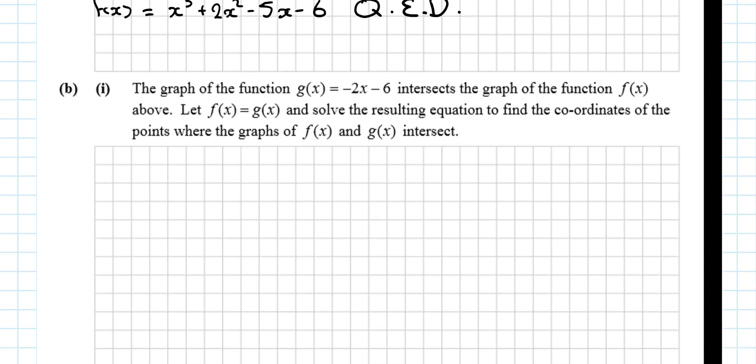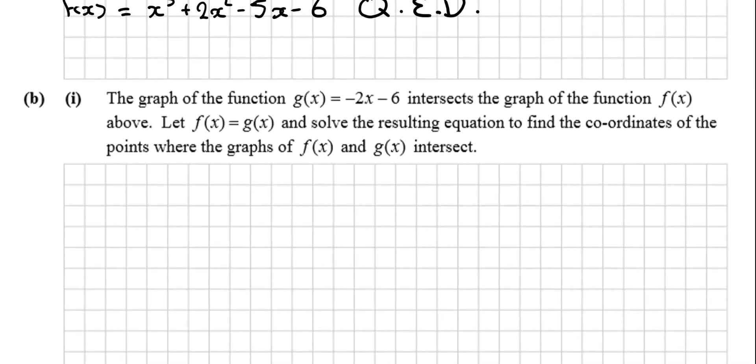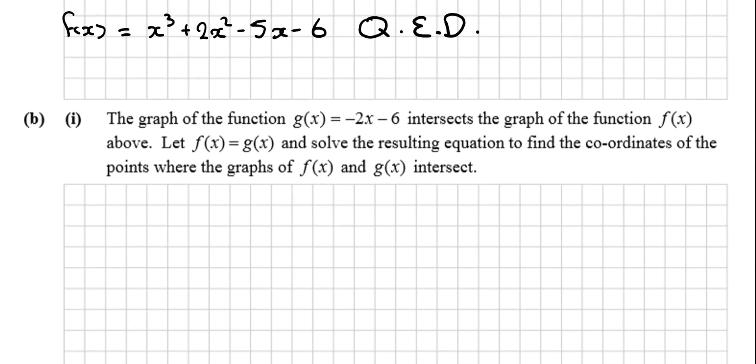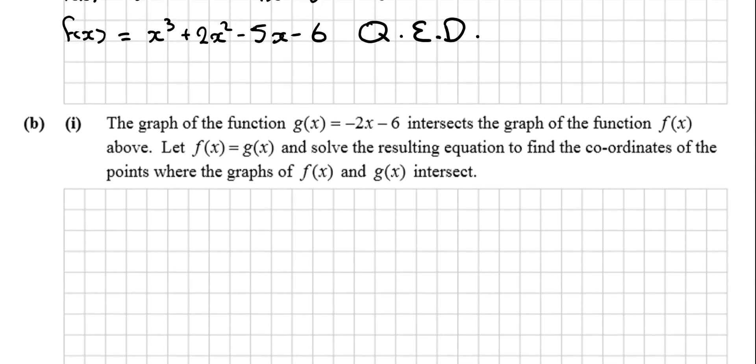The graphs of the function g(x) equal to minus 2x minus 6 intersects the graph of the function above. Let f(x) equal to g(x) and solve the resulting equation to find the coordinates of the points where f(x) and g(x) intersect. Well, this is a bit like Ronseal. Do exactly what it says on the tin. Put f(x) equal to g(x). And it's possibly worth noting. What is this? Well, this is a cubic. We know that. But what's this? This is a linear. And what does a linear look like? Well, what word does it contain? The word line. So, it's going to look like a line.